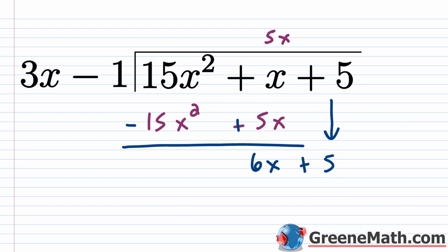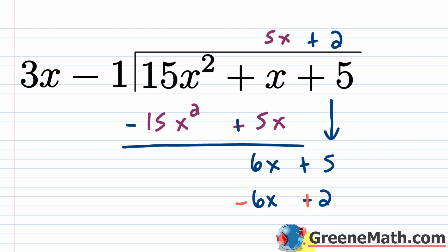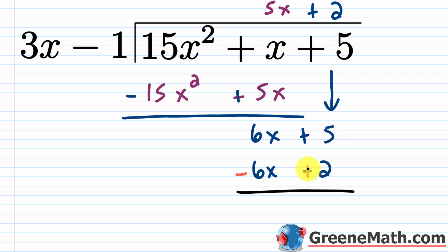Now we say 6x divided by 3x, which is going to be 2. So let's put plus 2, and multiply: 2 times 3x is 6x, and 2 times negative 1 is negative 2. Again, we change the sign of each term here, so this becomes a minus and this becomes a plus. Then 6x minus 6x is 0, and 5 plus 2 is 7.